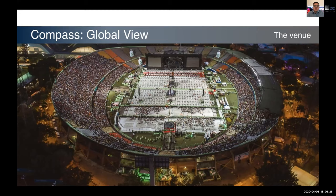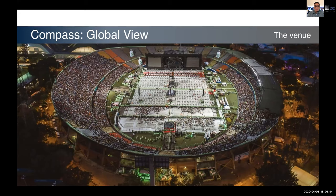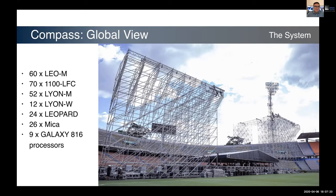We had people on the sides. You can also see roughly three delay towers we were using to cover the farthest seats. This was about two hours before the show started, so people were being placed. The system consisted of: 60 Leo, 60 Leo M, 70 1100 subwoofers, 52 Lion M, and 12 Lion W — which has wider horizontal coverage than the M model. We got 24 Leopard for front fields, 26 Micas for the 90-degree system, and nine Galaxy processors for all of this equipment.